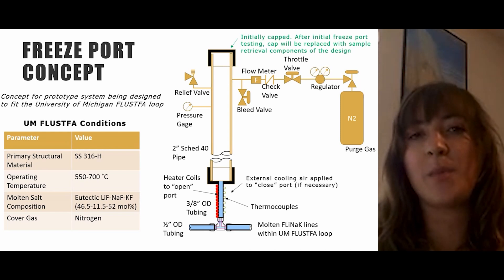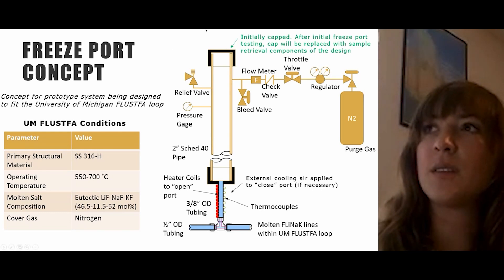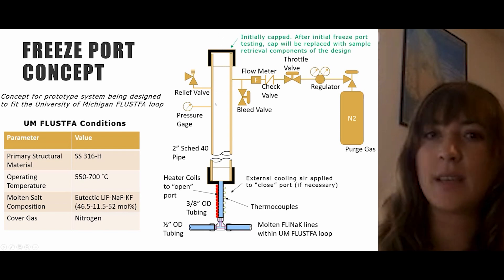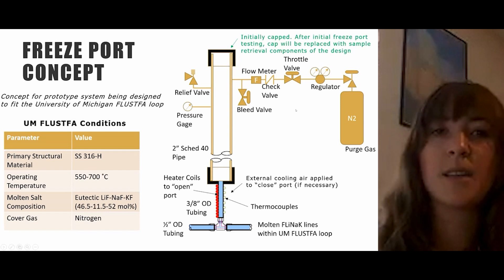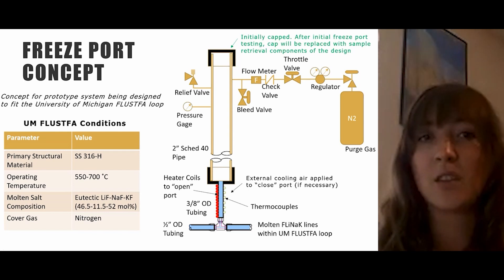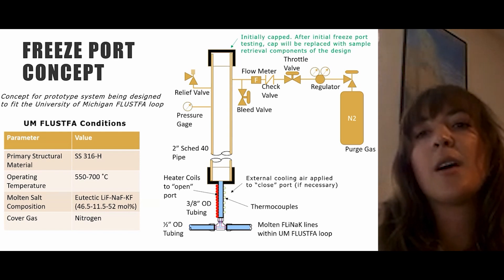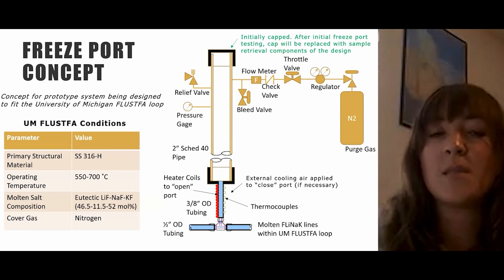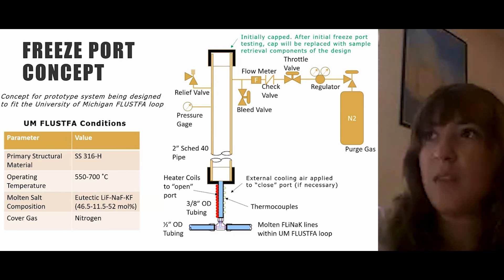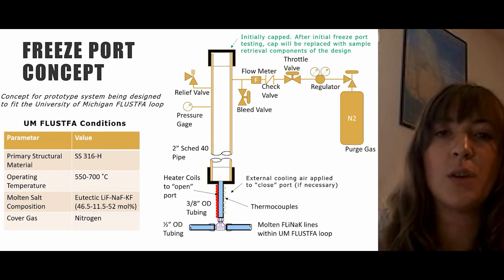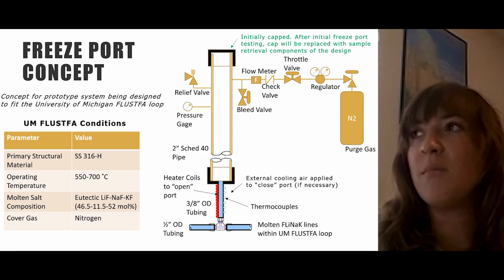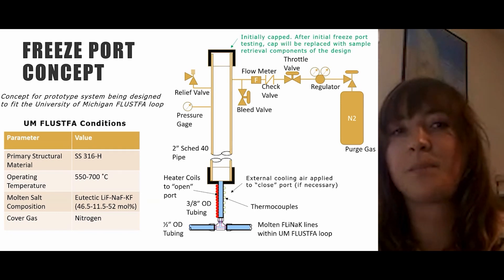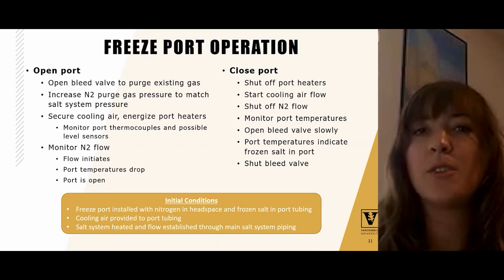We first intend to demonstrate this freeze port concept's ability to reliably open and close prior to demonstrating the sample retrieval aspects of the design, which are still in development. There are two aspects to sample retrieval: sample collection and sample transport. These will be done by inserting the sample collection device through the top of the cap. Concepts we have considered include a syringe-like sample collection device inspired by the Homogeneous Reactor Experiment 2 sampling system, and transport mechanisms including pneumatics such as the rabbit systems used in research reactors, or a mechanical train track-like concept.